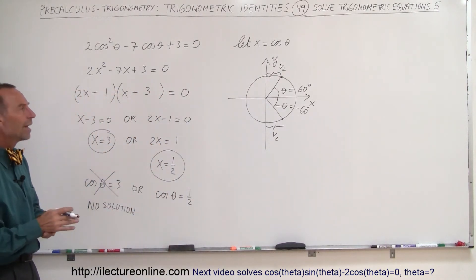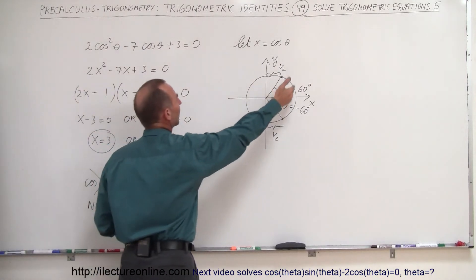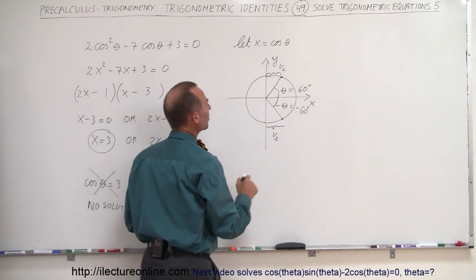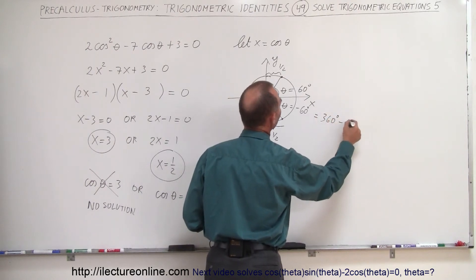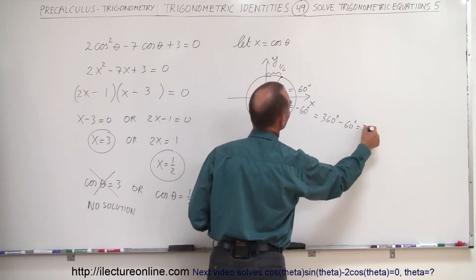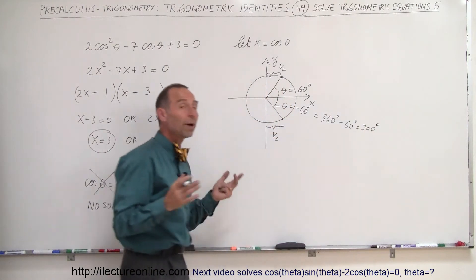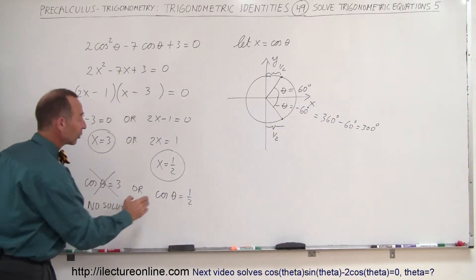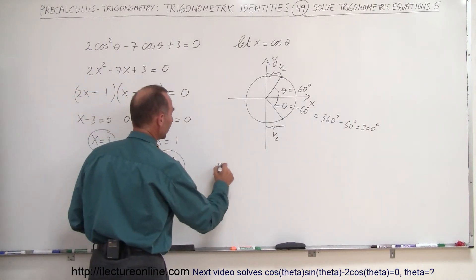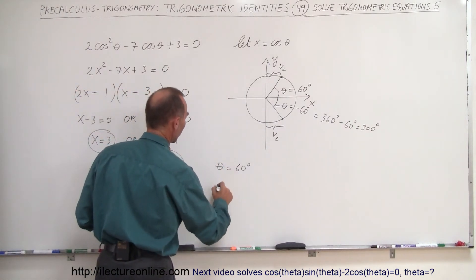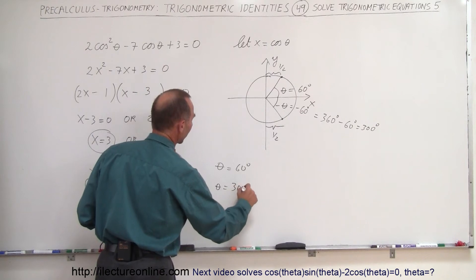But we don't want a negative angle. We want an angle between 0 and 360 degrees, which means that this is equal to 360 degrees minus 60 degrees, which is 300 degrees. That means there's two possible answers, that when we take the cosine of those angles, we get equal to 1 half, which means theta can equal to 60 degrees, or theta can equal to 300 degrees.